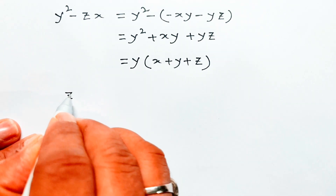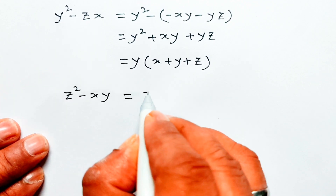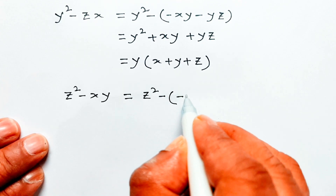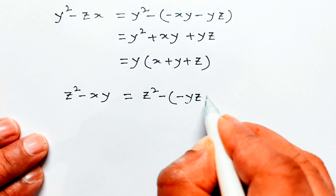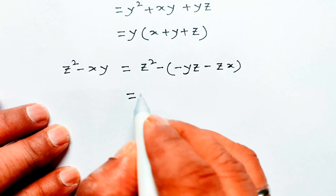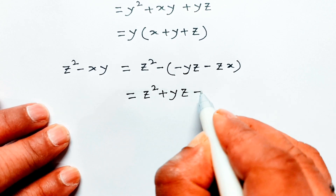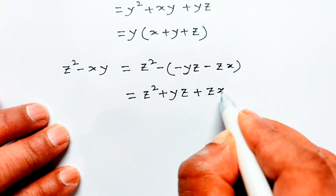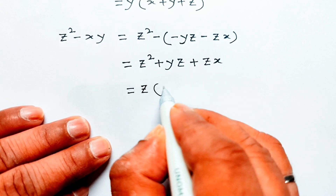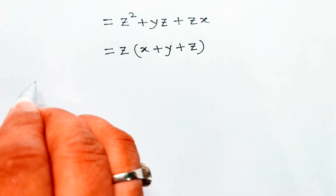z squared minus xy equals z squared minus (minus yz minus zx), which equals z squared plus yz plus zx. Taking z as common: z(x plus y plus z).